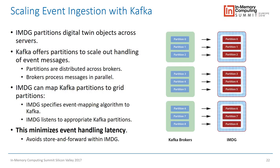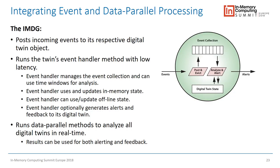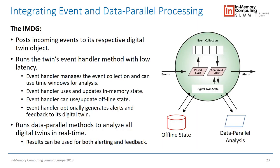Integrating event processing and data parallel processing with the digital twin model: when an event comes in, it posts to its event collection, evicts old events, and the digital twin analyzes it — drawing on offline state as necessary. Meanwhile, independently, data parallel analysis can be taking place simultaneously. The data parallel evaluation algorithm knows exactly how the state is organized because it's part of the same class design, so it reaches into the state, extracts what it needs, and aggregates it. A very clean, object-oriented design for both event processing and data parallel processing.